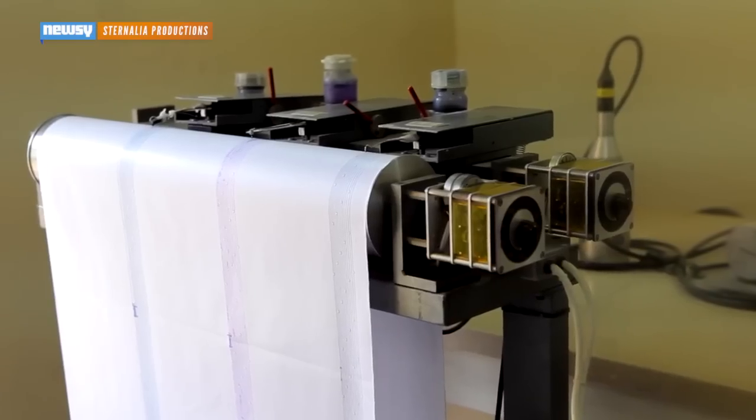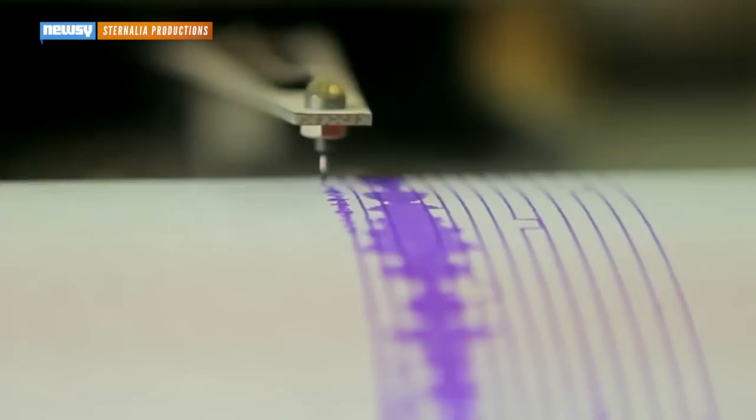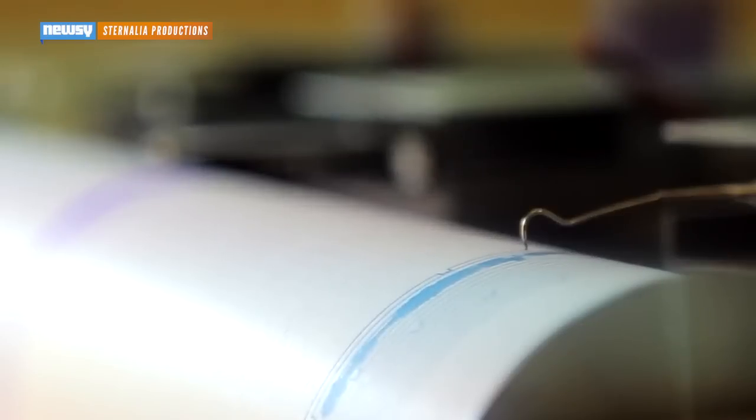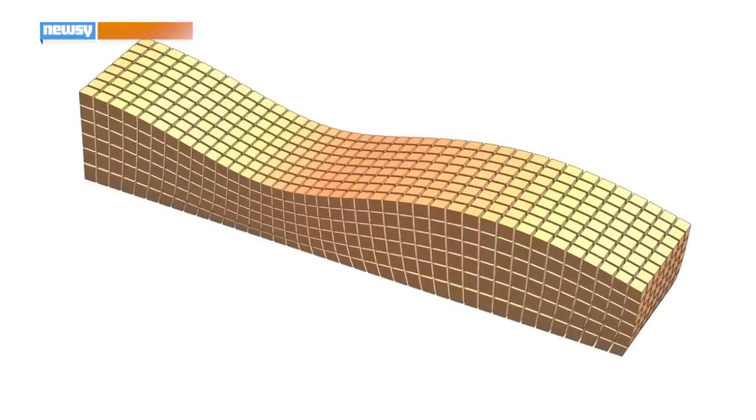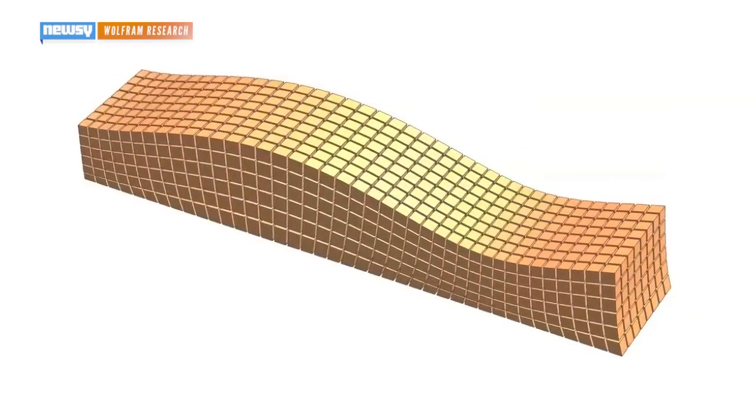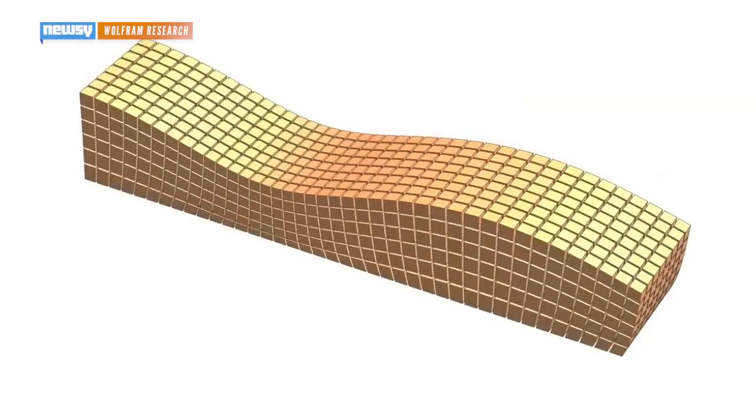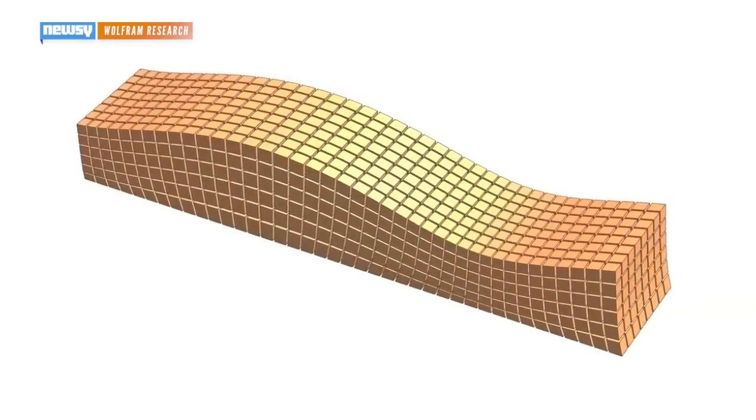So instead, geologists tend to use seismological data, measuring how waves of energy generated by earthquakes and volcanic eruptions travel through the Earth's layers. The researchers measured the ways those different seismic waves were distorted as they travel to establish the orientation of the iron crystals.